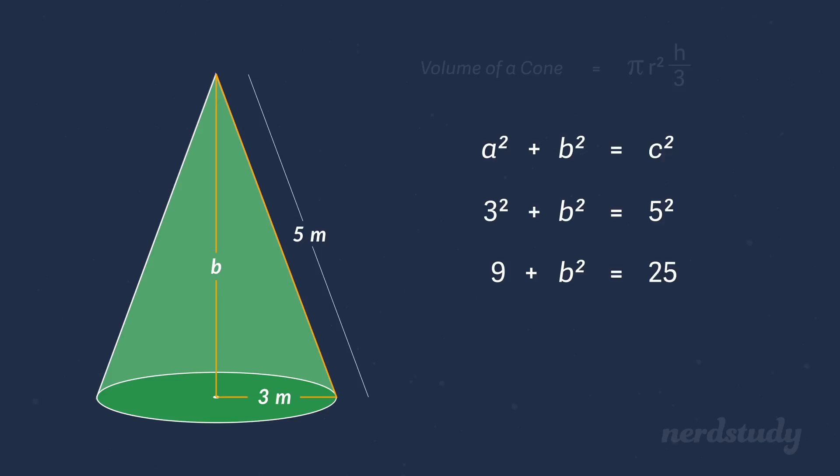Isolate b squared by subtracting both sides by 9 to get b squared equals 16. Let us square root both sides to get b equals 4. So the height is 4.